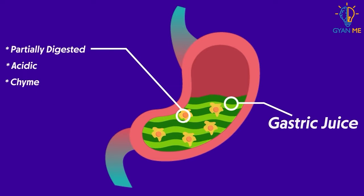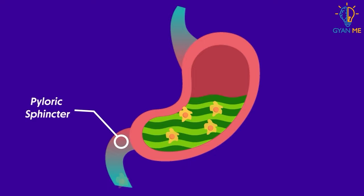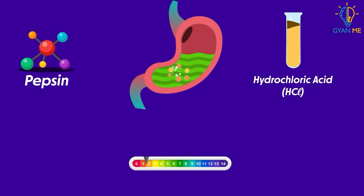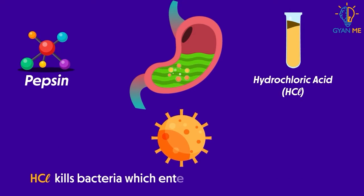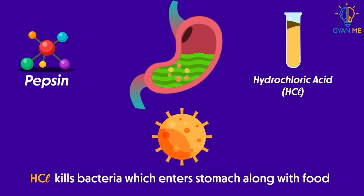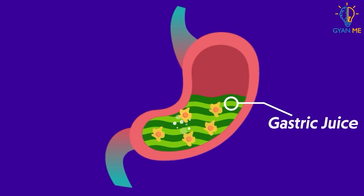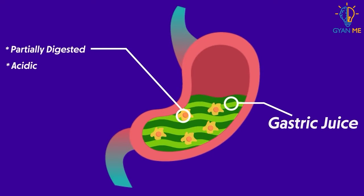In the stomach, food is digested for 3 to 4 hours. Glands in the stomach called gastric glands secrete various chemicals like hydrochloric acid (HCl), which kills bacteria and provides an acidic medium for activation of the enzyme pepsinogen to pepsin — its active form.